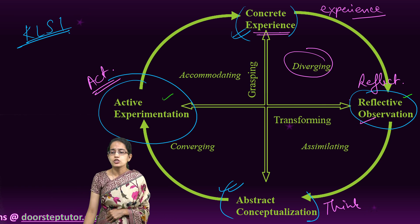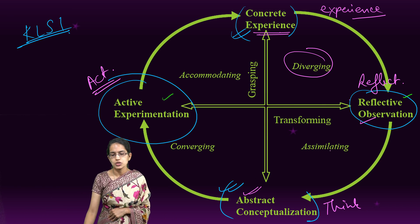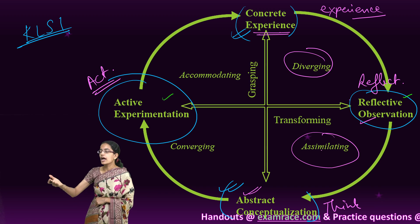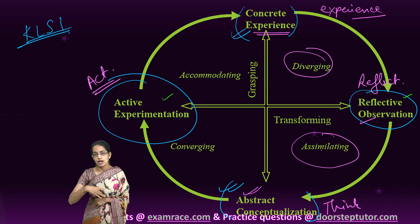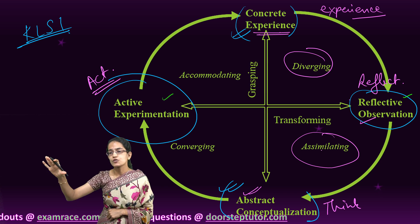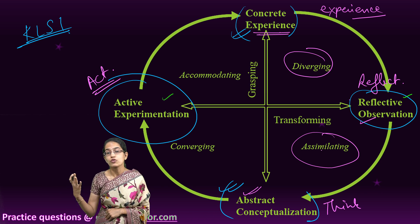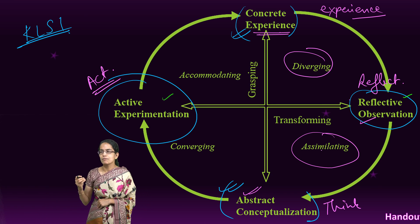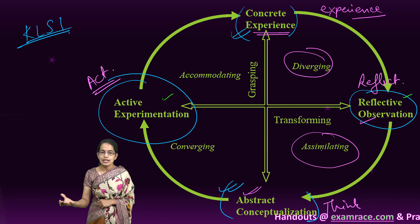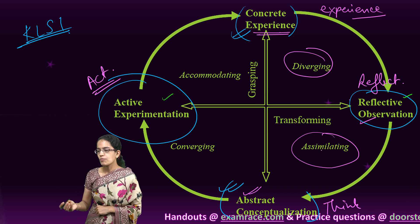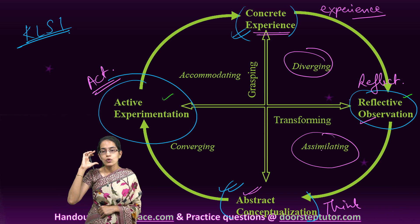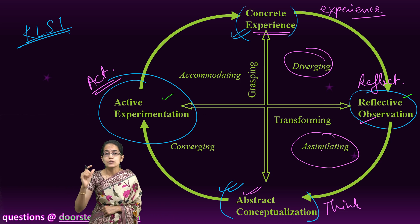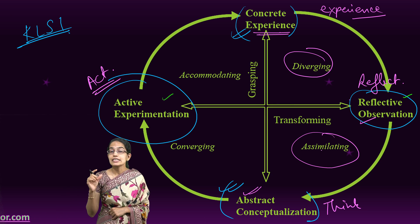Between the stage of reflective observation and abstract conceptualization, we have assimilation. Assimilation is the state where we are trying to understand whatever information has come to us. Whatever art and dance forms we have seen across the various states of Northeast India, for example, we are trying to assimilate those. This assimilation is mainly seen in formal learning in the form of lecture notes, time to think, time to grasp the concepts that have been explained, and time to explore certain concepts.